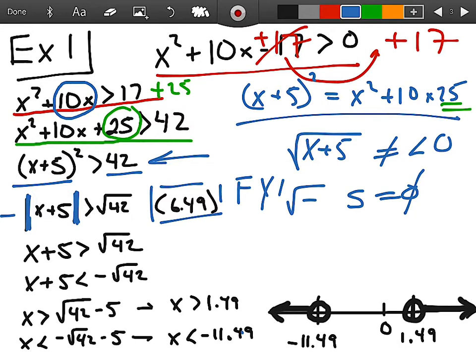So what ends up happening is you get a situation where you get x plus 5 is greater than plus or minus the square root of 42. And here, that splits out into two different equations, this top one and this bottom one. On the top one, you're doing greater than a positive square root of 42. But then on the bottom one, you have to do a less than a negative square root of 42.